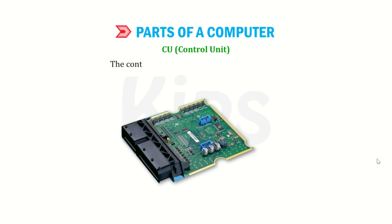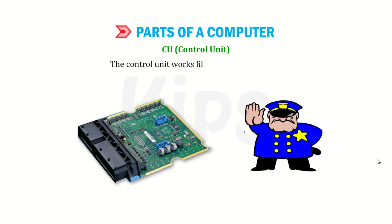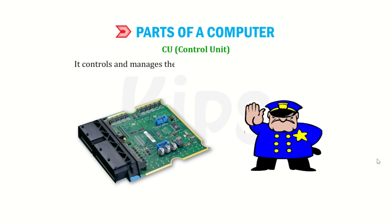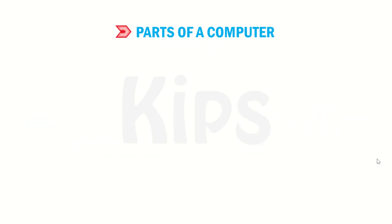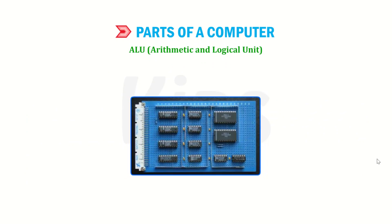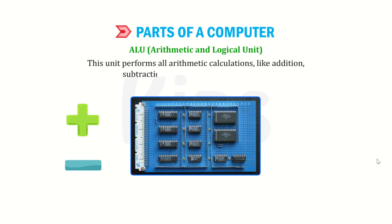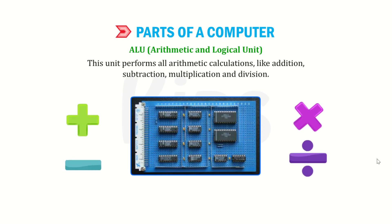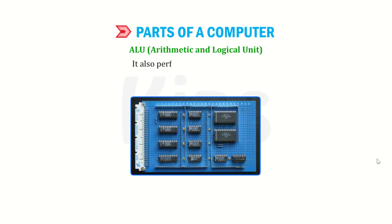The control unit works like a traffic policeman. It controls and manages the working of all parts of a computer. The ALU performs all arithmetic calculations like addition, subtraction, multiplication and division. It also performs logical operations.